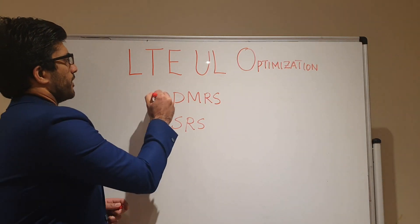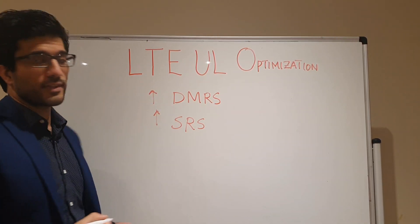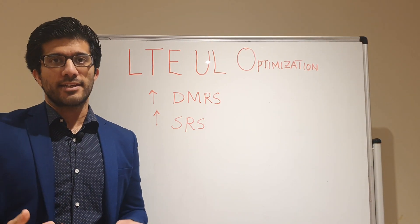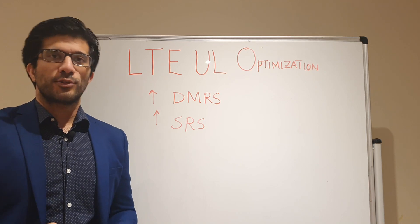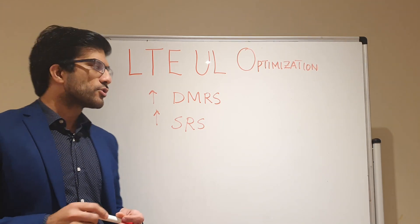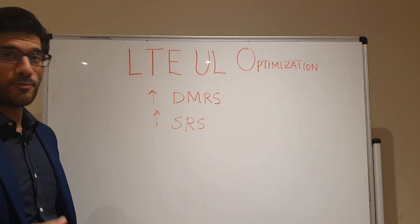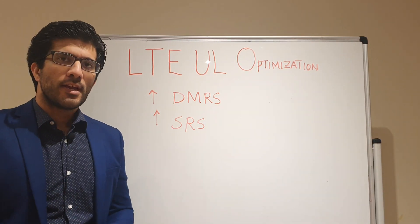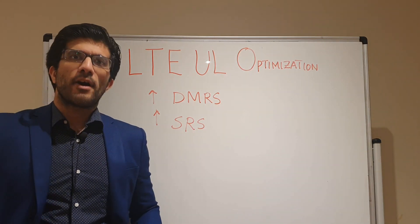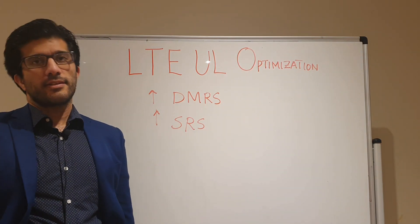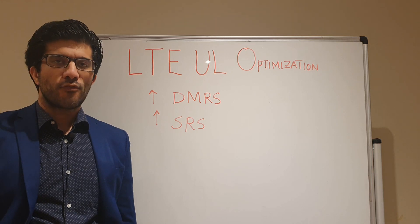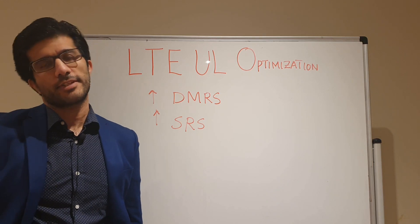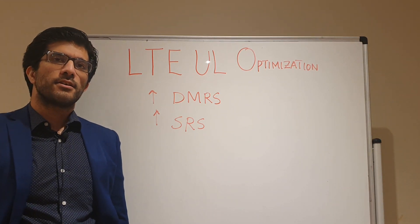Both of these reference signals are being sent by your mobile to the base station. Both have different functionalities. The DMRS — the Demodulation Reference Signal — is basically used for demodulating your data or your control signaling being received by the eNodeB.